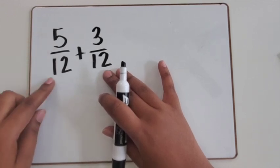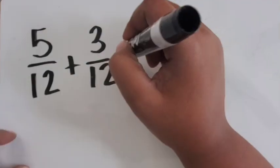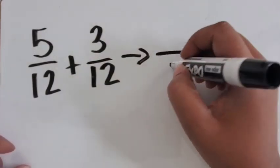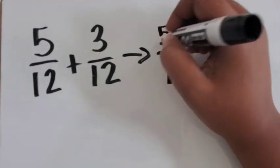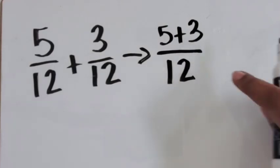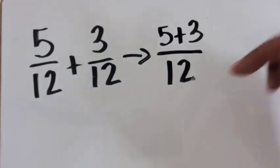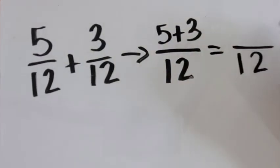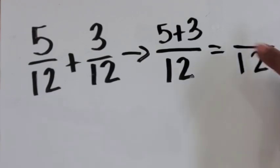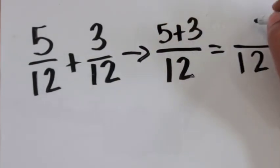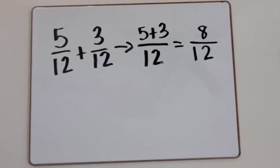We have five of the twelfths, and we're going to add on three of the twelfths. Let's look at it differently by joining those two numerators together, and remembering that no matter what, our denominator will still be twelfths. Five plus three is eight, so five twelfths plus three twelfths equals eight twelfths.